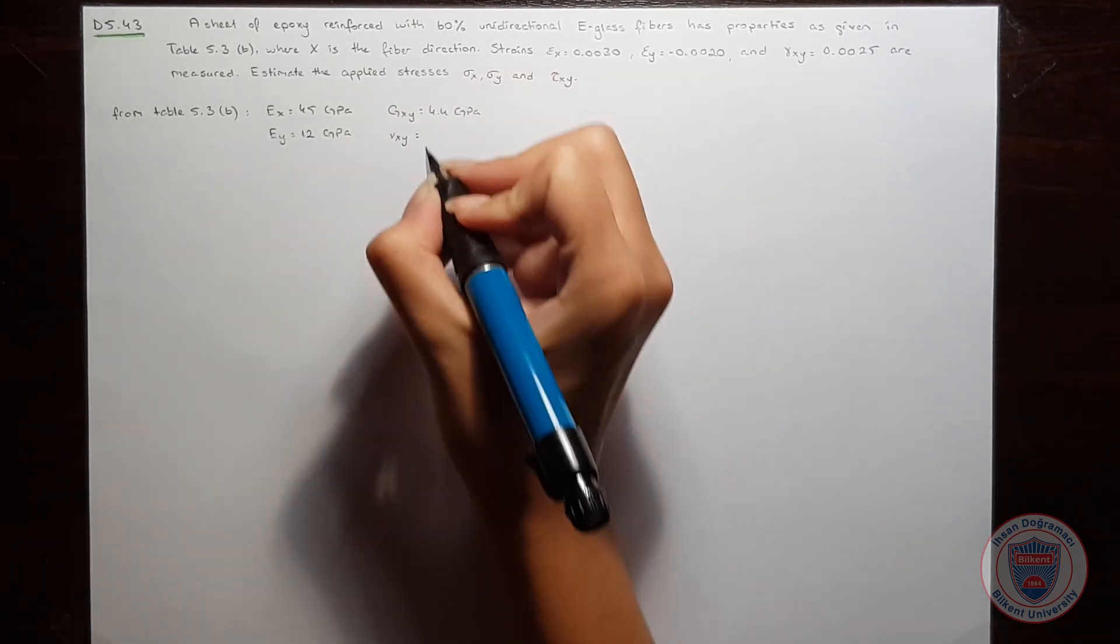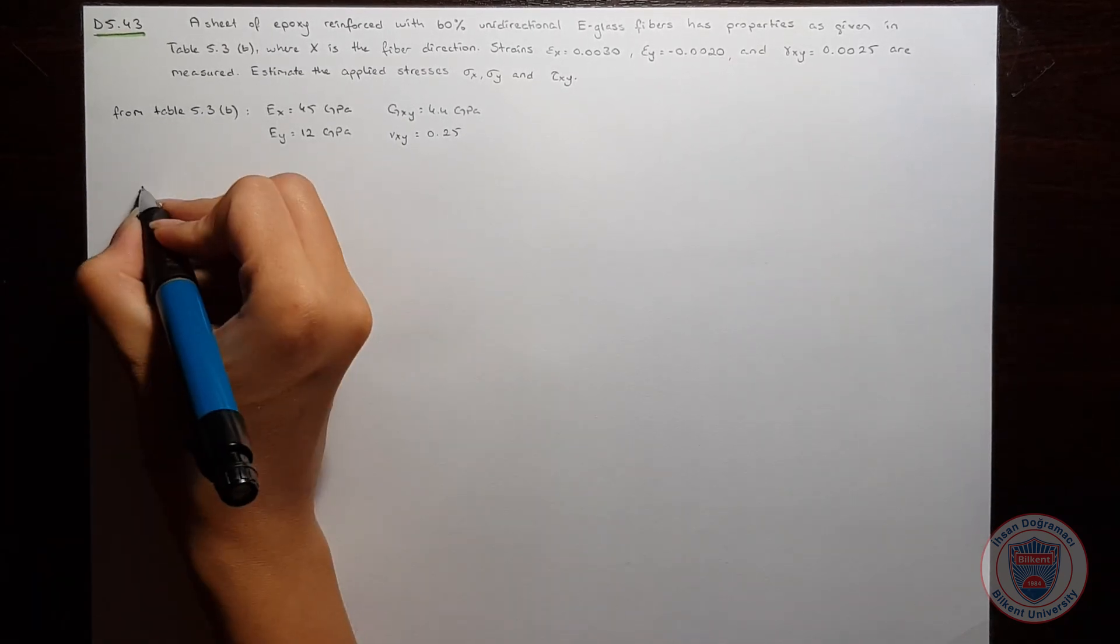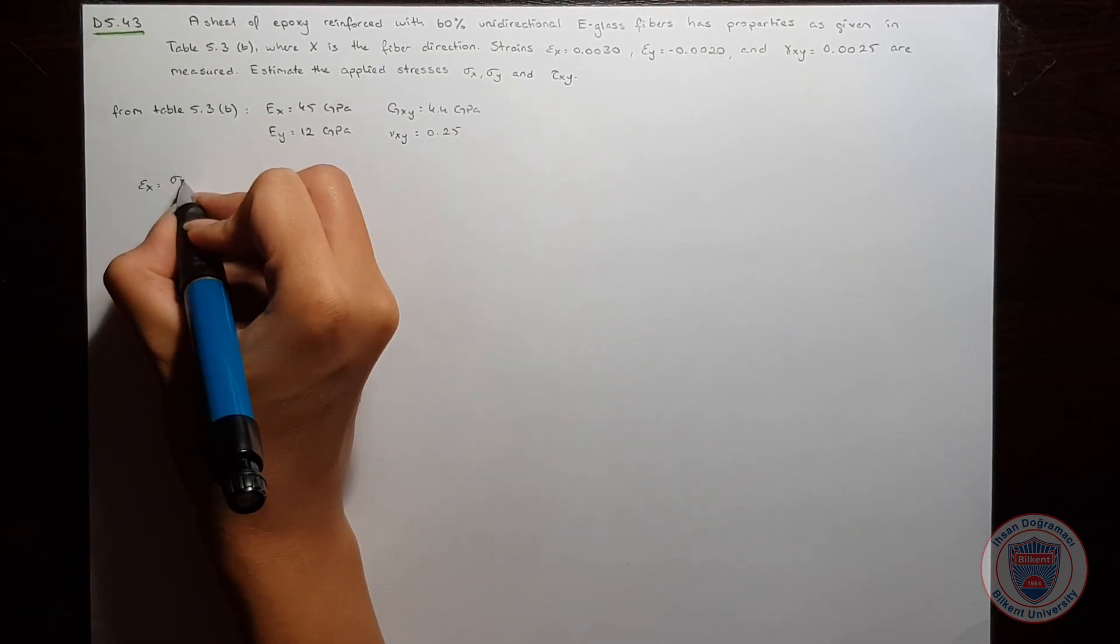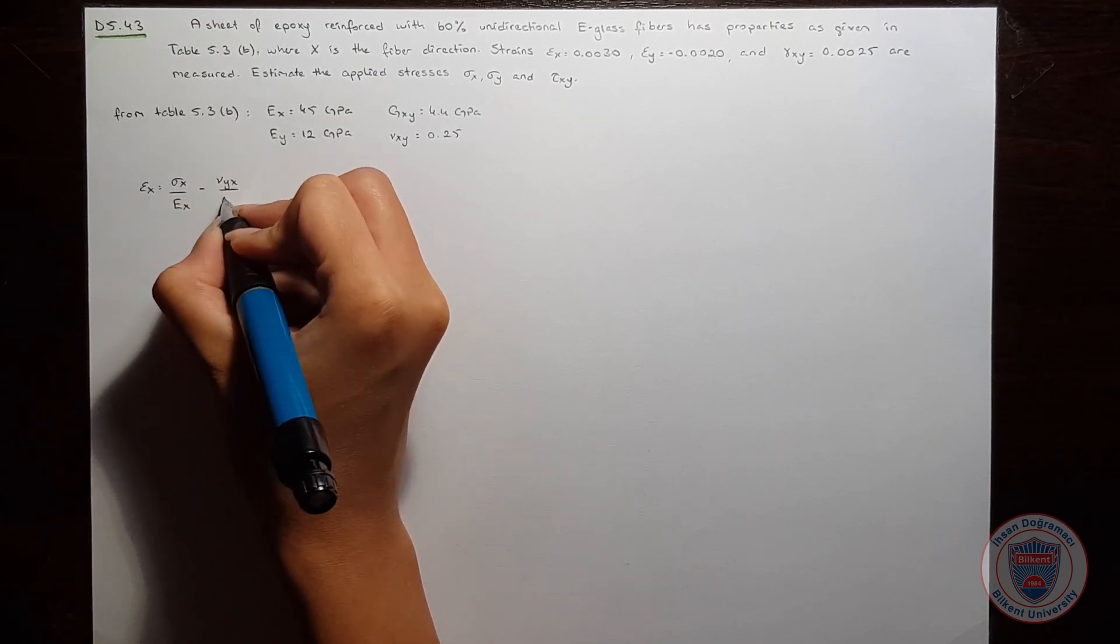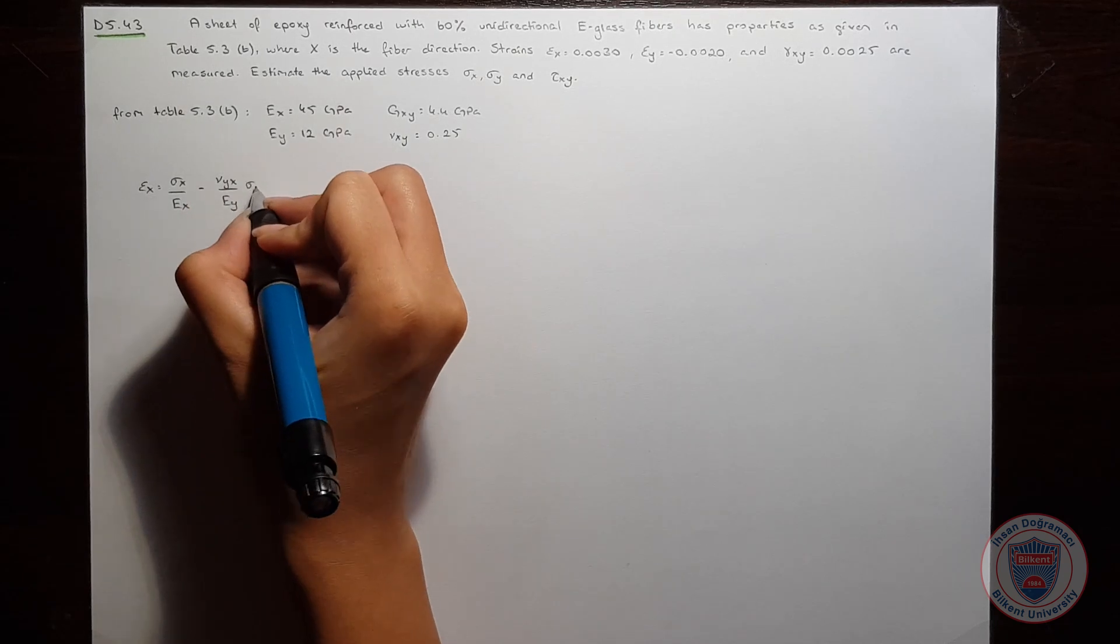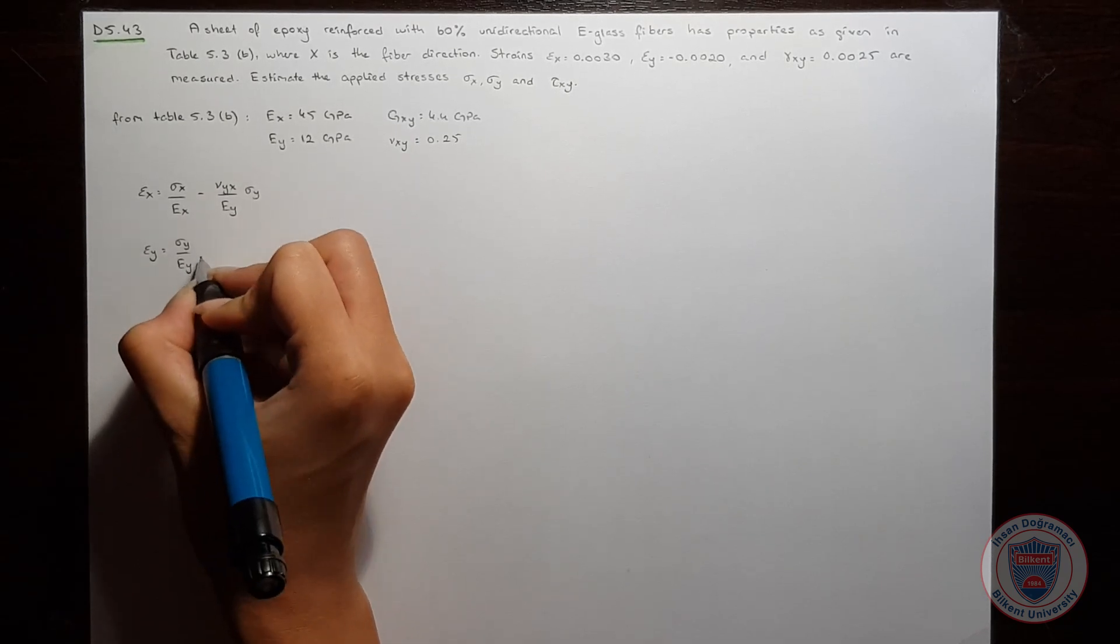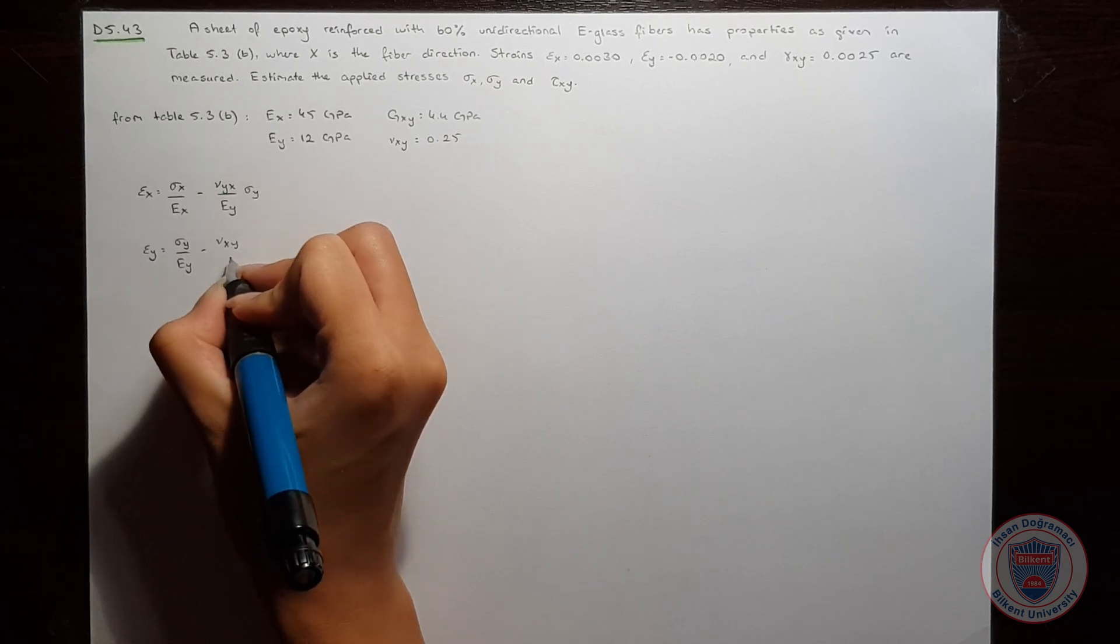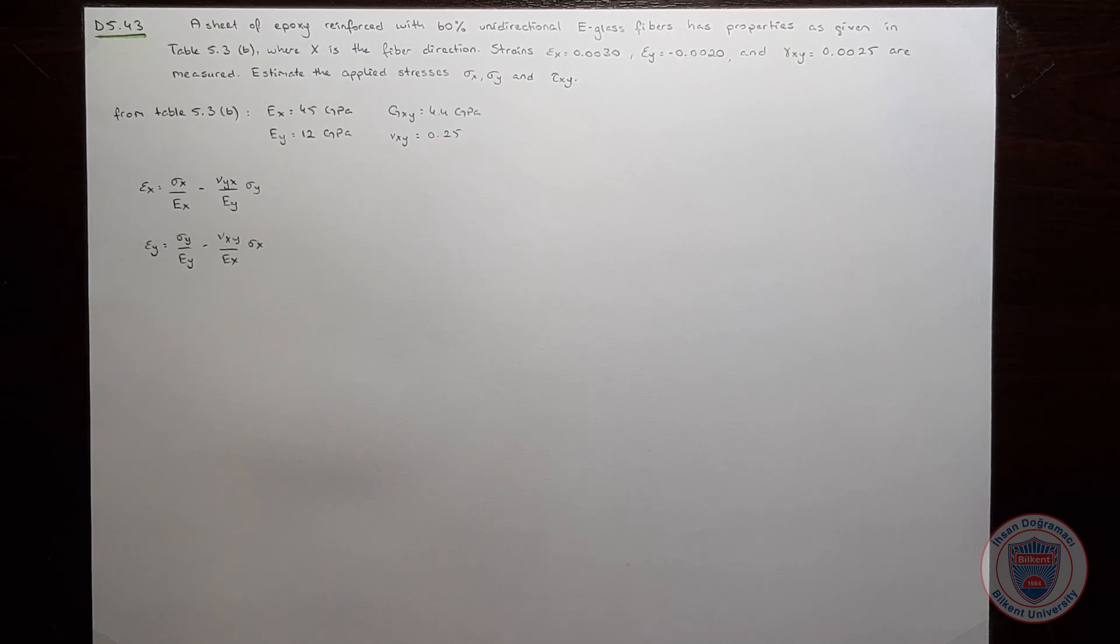So, let's start writing the equations. We know that εx is equal to σx over EX minus νyx over EY times σy. Now, we should make some arrangements to find σx and σy.